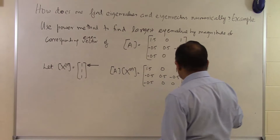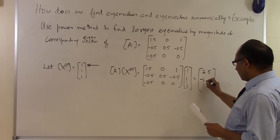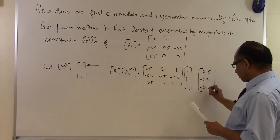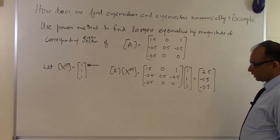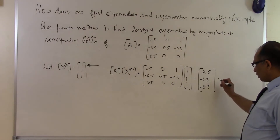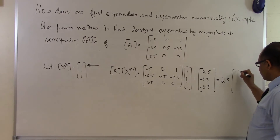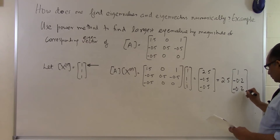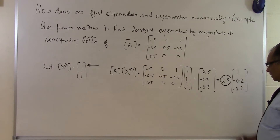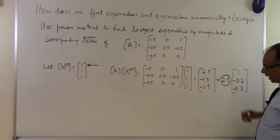The result is [2.5, -0.5, -0.5]. Since we want to keep the first component of the eigenvector equal to 1, we divide through by 2.5. This gives us an eigenvalue estimate of 2.5 and an eigenvector of [1, -0.2, -0.2]. That is our first estimate for both the eigenvalue and eigenvector.